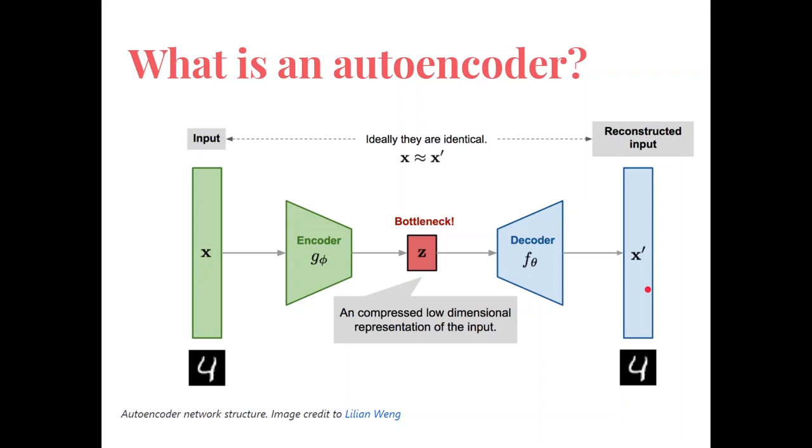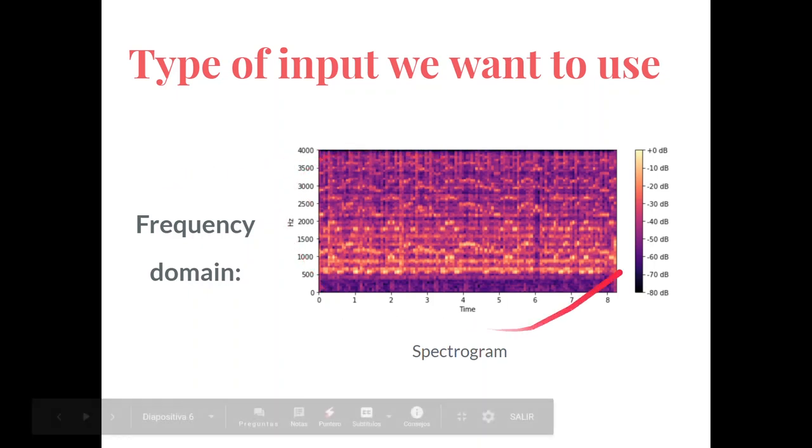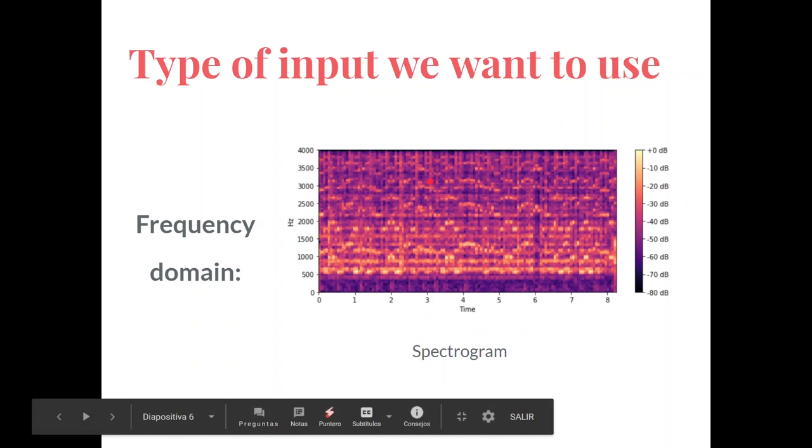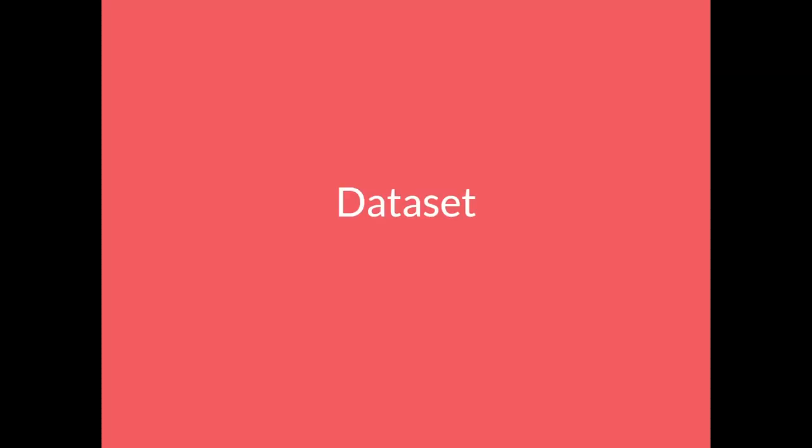So in our case, what we are going to feed the network is they are images but they are spectrograms in the frequency domain. So first of all, what we need to do is to convert our audio files to spectrograms. And now Jaime will explain to you how we build and how we get our dataset.